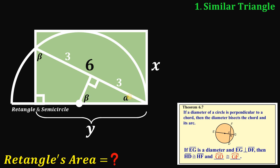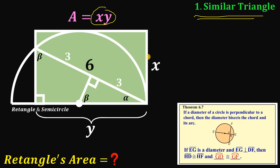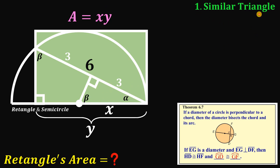Let x be the height of this rectangle and y be the base. The area of the rectangle is simply x times y, so our goal is to find the value of x times y. Notice that the height x is also the radius of this semicircle — drawing the height here gives us the radius — therefore this segment is also equal to x.